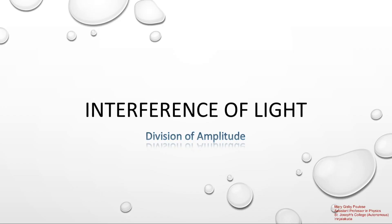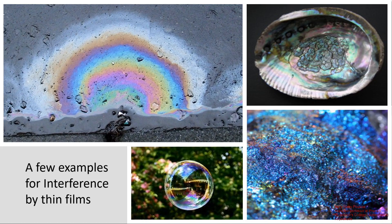Good day students. Today we shall look into interference of light by division of amplitude. This is mainly seen in thin films. Here are a few examples: on the top right we can see the spread of an oil slick — oil spread upon a road surface. While spreading, it forms a very thin film, and this causes such a pattern. When sunlight falls upon this thin film, we can see colors from it.